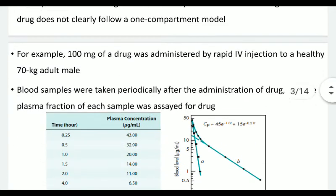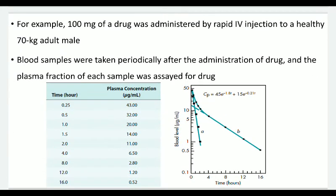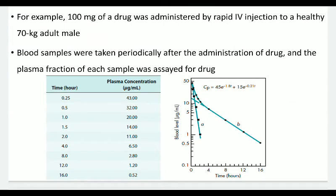For example, 100 mg of drug was administered by rapid intravenous injection to a healthy 70 kg adult male. Blood samples were taken periodically after administration, and the plasma fraction of each sample was assayed for drug. A brief case study has been given showing how we can utilize the method of residual to study the bi-exponential curve. A subject is given a fixed dose of 100 milligrams, samples are collected periodically, and the plasma concentration of each sample is determined.